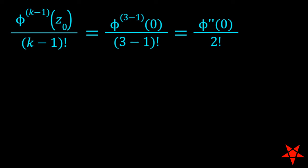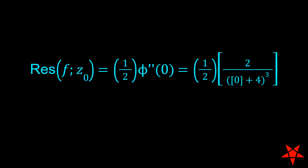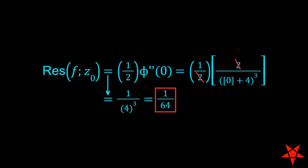we find that z minus nothing to the third cancels with its counterpart in the denominator, and two derivatives later, we have 1 over z plus 4 to the third power. Evaluating this at z equals 0 gives us 1 over 64.